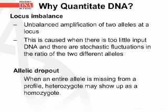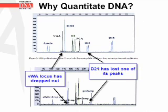Allelic dropout occurs when an entire allele is missing from a profile. This can result in a heterozygote showing up as a homozygote. This diagram shows the same profile — the top part is with the correct amount of input DNA, and the bottom part shows what occurs when too little DNA was input. Here you can see that allelic dropout occurred at the VWA locus and there was a locus imbalance that occurred at the D21 locus.